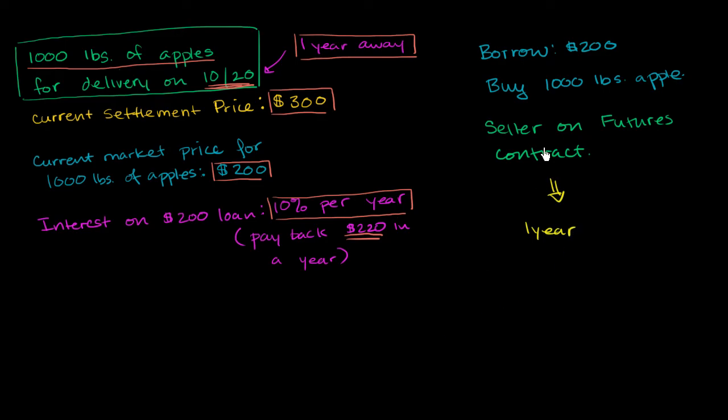So in one year, we definitely have 1,000 pounds of apples. And just for the sake of simplicity, let's assume that apples don't get bad, that I've somehow freeze dried them, or I don't know. These are apples that never spoil. So let's say a year from now, I have the 1,000 pounds of apples.